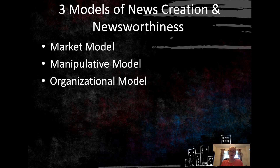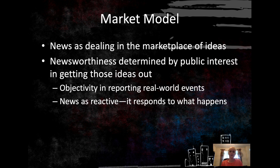Continuing with our discussion on news, we're going to talk about three different models of news creation and newsworthiness, documented in more detail in the Surratt text. We have the market model, the manipulative model, and the organizational model. First, the market model — this is really news as dealing in the marketplace of ideas. Newsworthiness is determined by public interest in getting those ideas out, ranking stories from most to least important. Essentially there's some objectivity in reporting real-world events, but it presents news as reactive — it responds to what happens and is not as involved in creation of the story. This is a very typical model we see today.